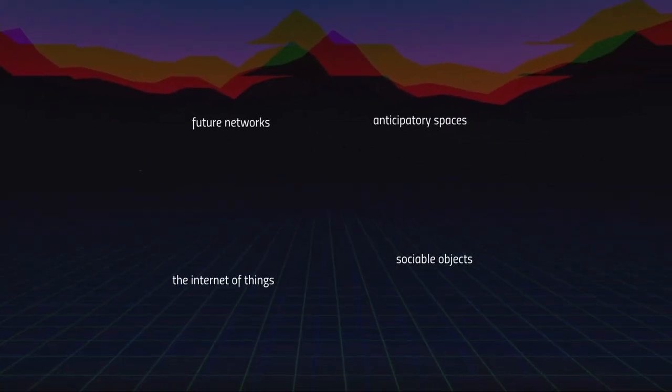The lecture is divided into four parts. I will start, as is customary, with a discussion linking the lecture to the remaining cycle of lectures on future networks, and then we'll jump into the Internet of Things as a concept and phenomenon, trying to understand how it all works together conceptually. Then we will explore what I term as sociable objects and anticipatory spaces.